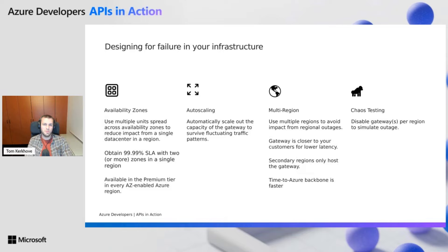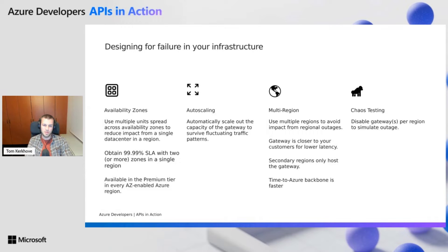First of all, we need to design for failure on the infrastructure. We need to make sure that all the units and machines running under the hood are highly available. That can be easily done by using availability zones, which make sure that all your units are spread across the region and avoid having failure when a single data center goes down. This highly increases your SLA as well and is available in premium tier and all AZ-enabled Azure regions.